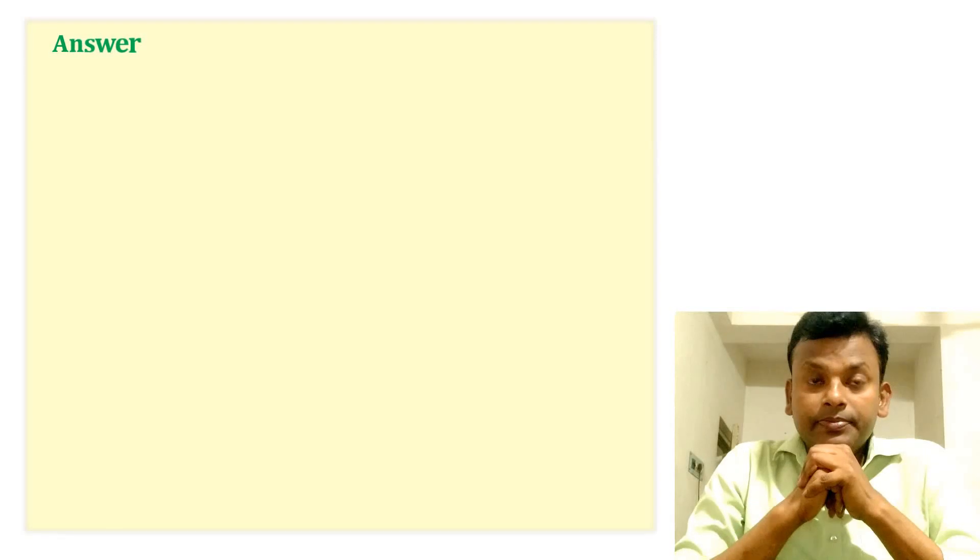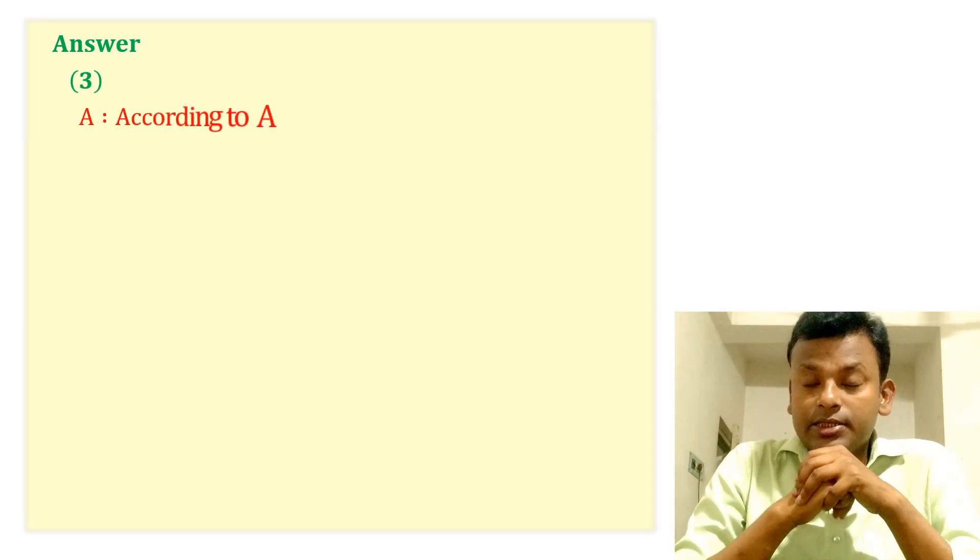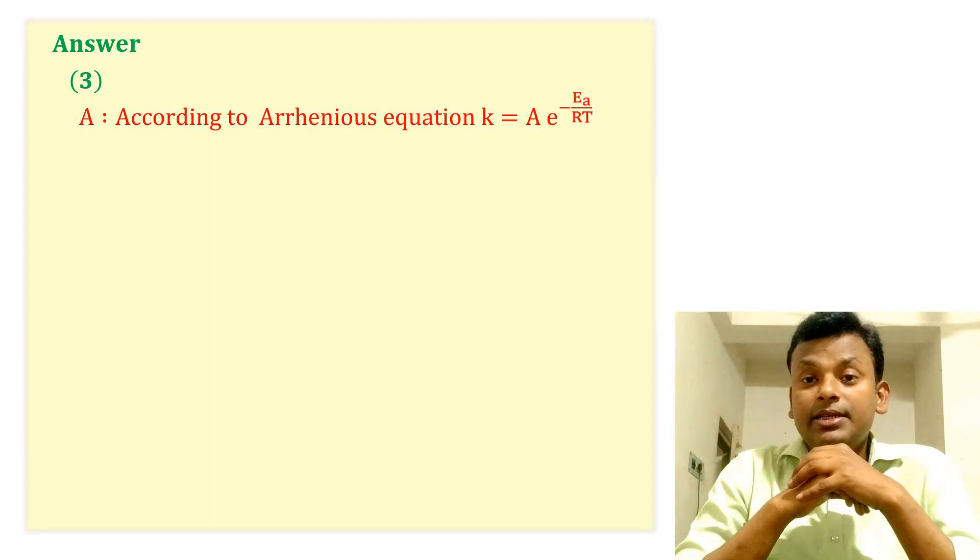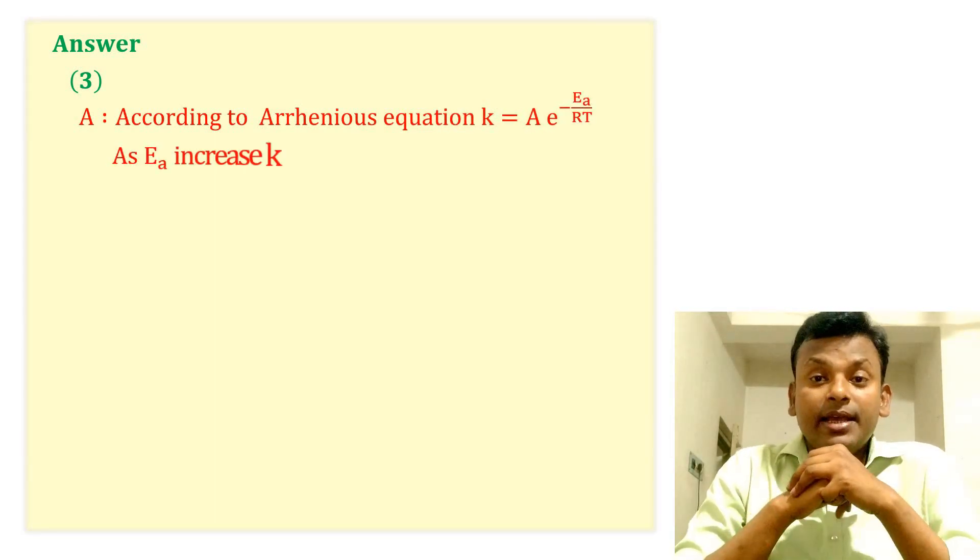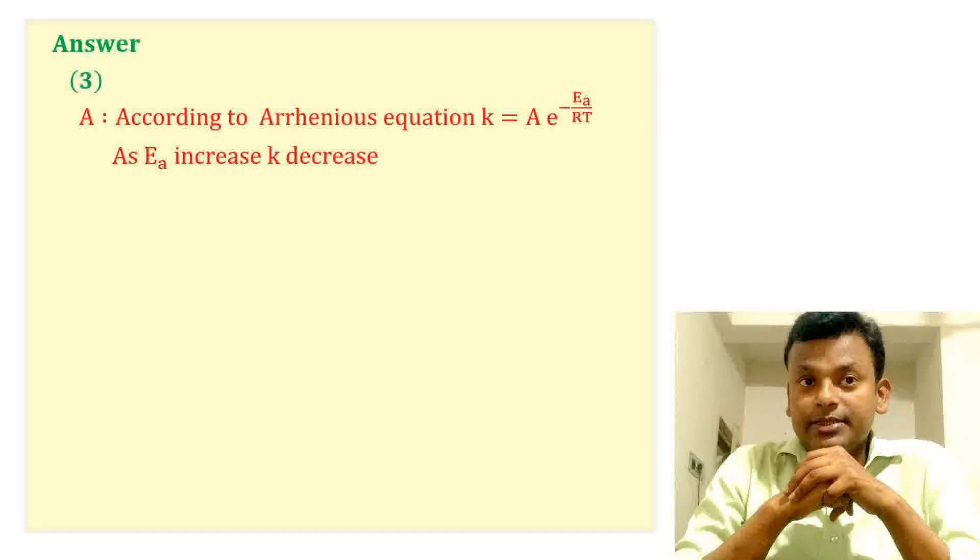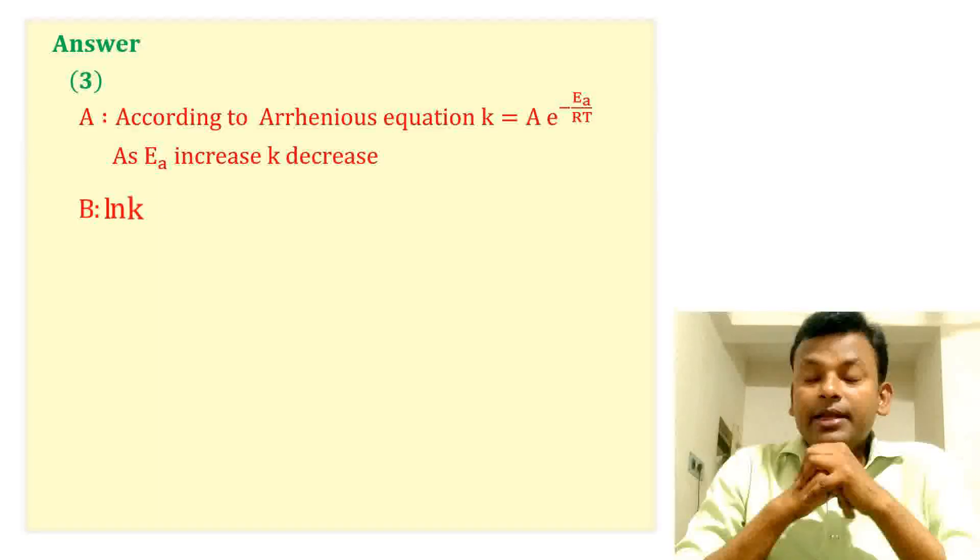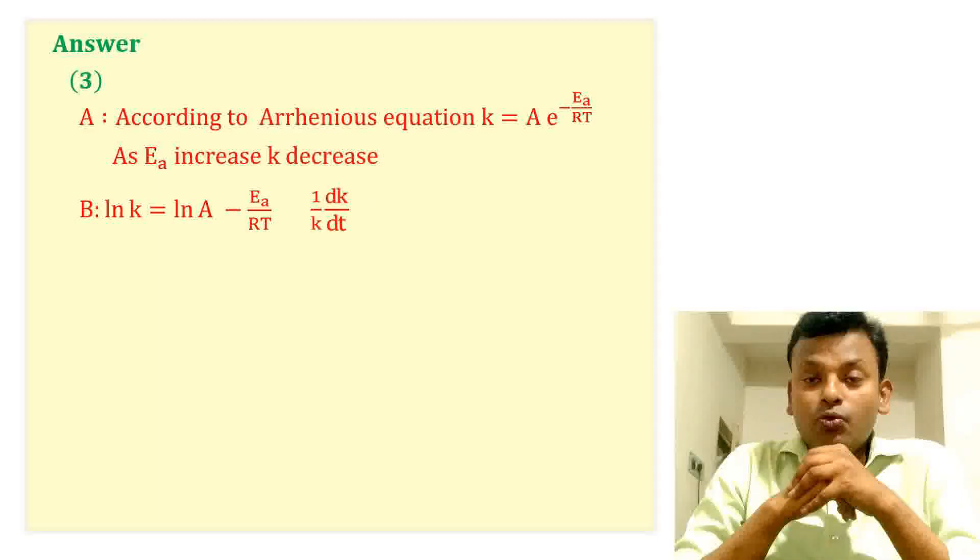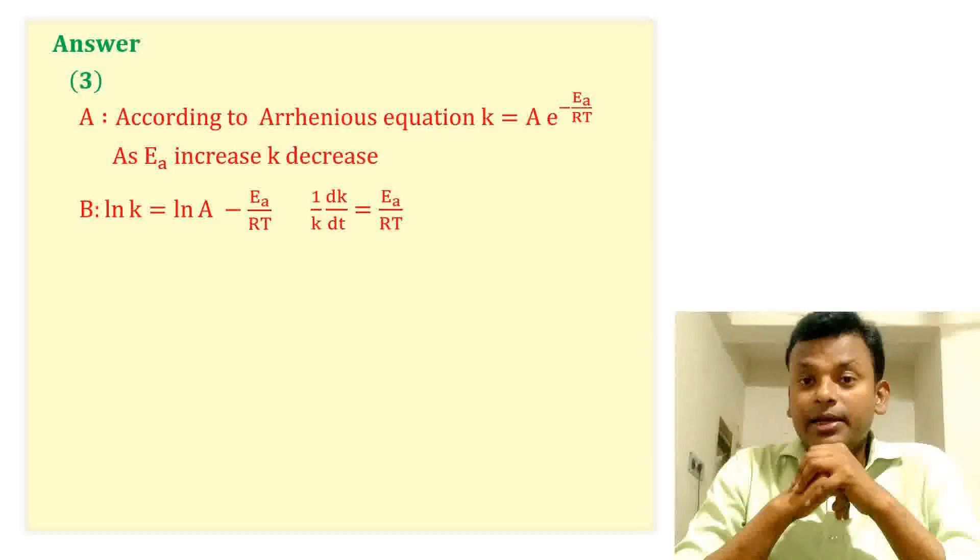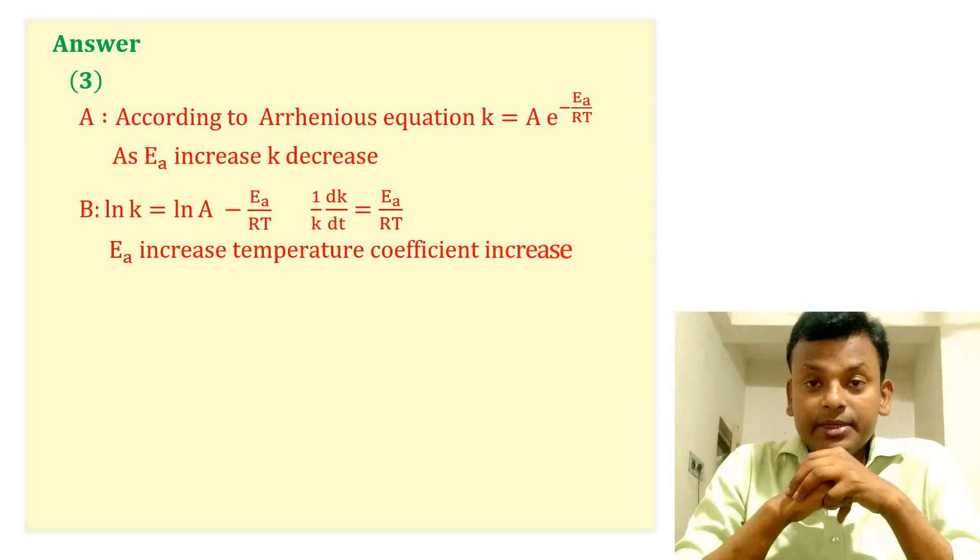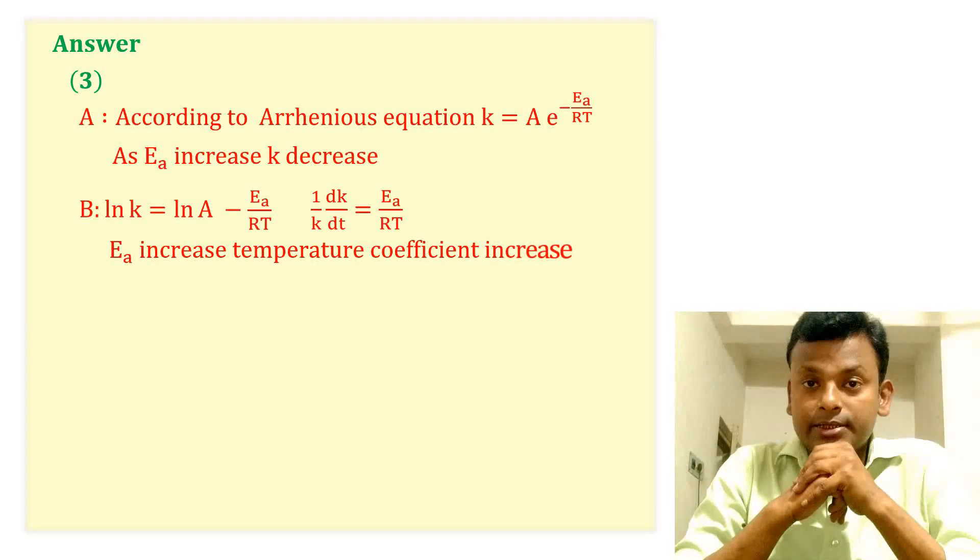Answer is 3. A. According to Arrhenius equation, K equals to A into e to the power minus Ea by RT. As Ea, that is activation energy, increases, rate constant decreases. B. ln K equals to ln A minus Ea by RT. 1 by K into dK by dT, that is the temperature coefficient, equals to Ea by RT squared. Similarly, as activation energy increases, temperature coefficient also increases.